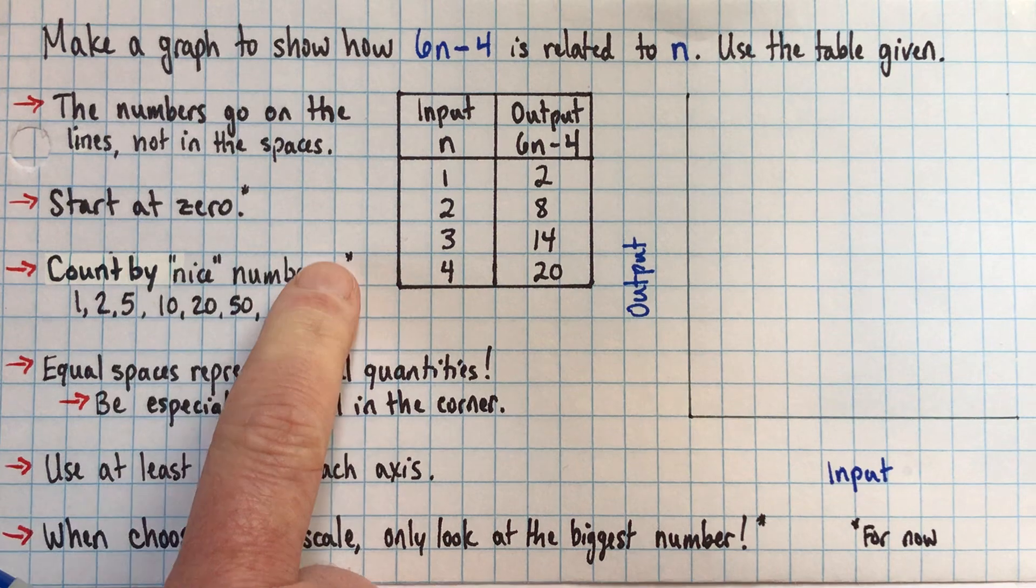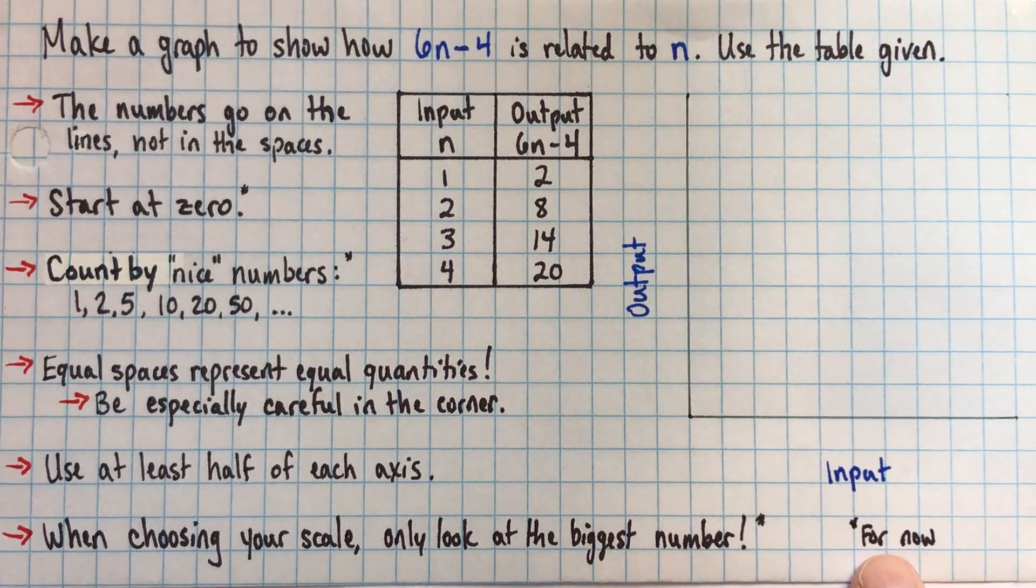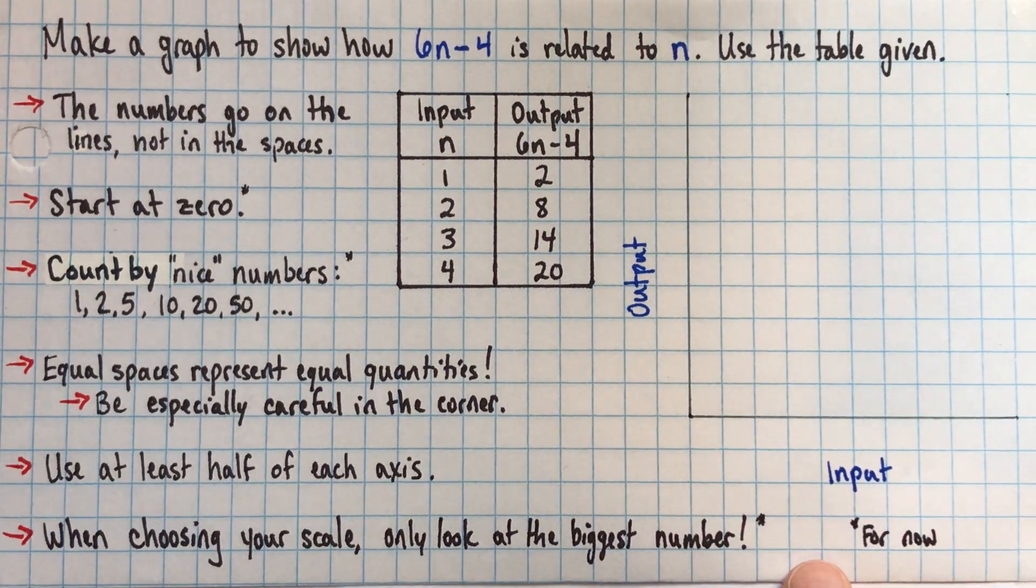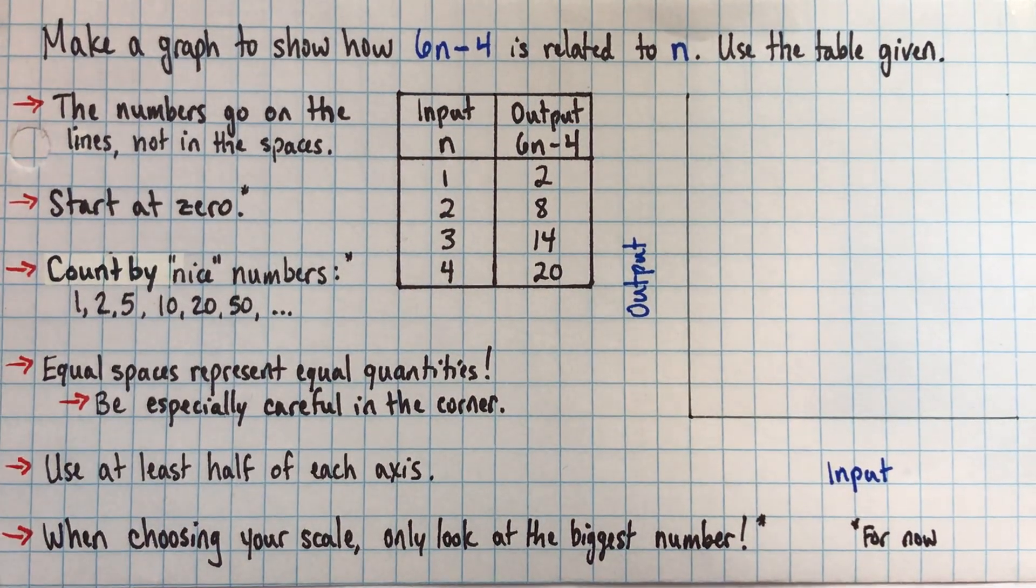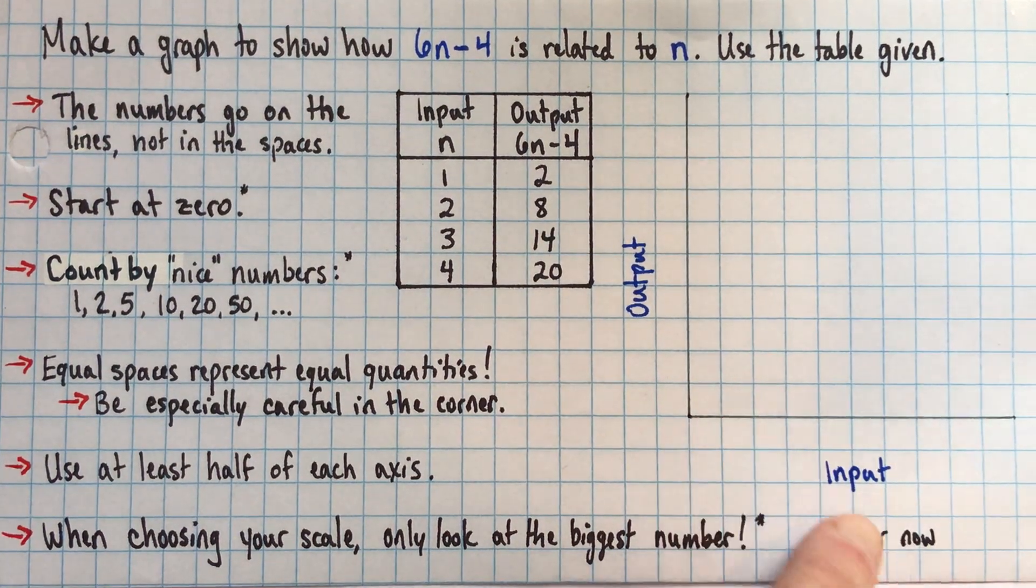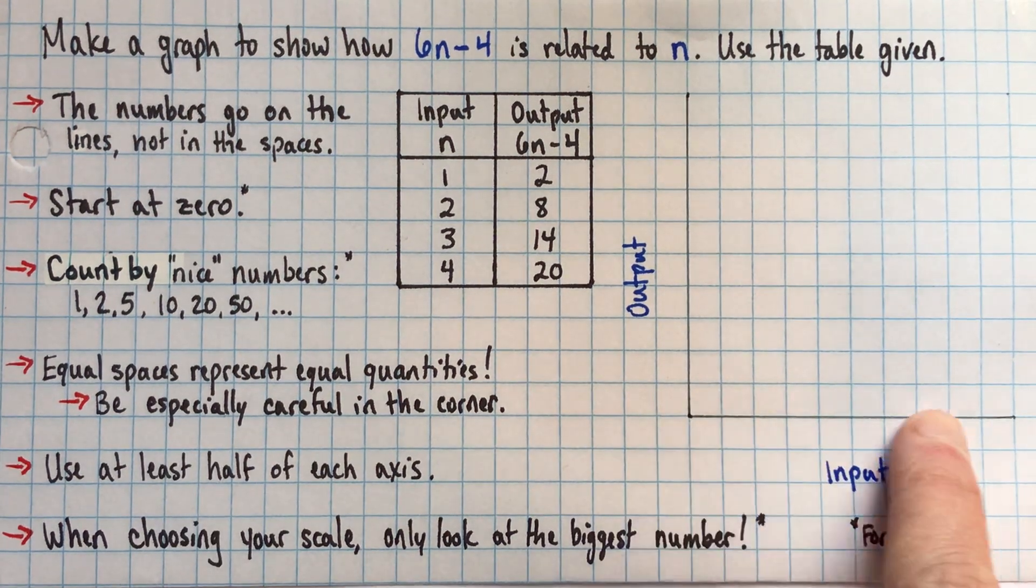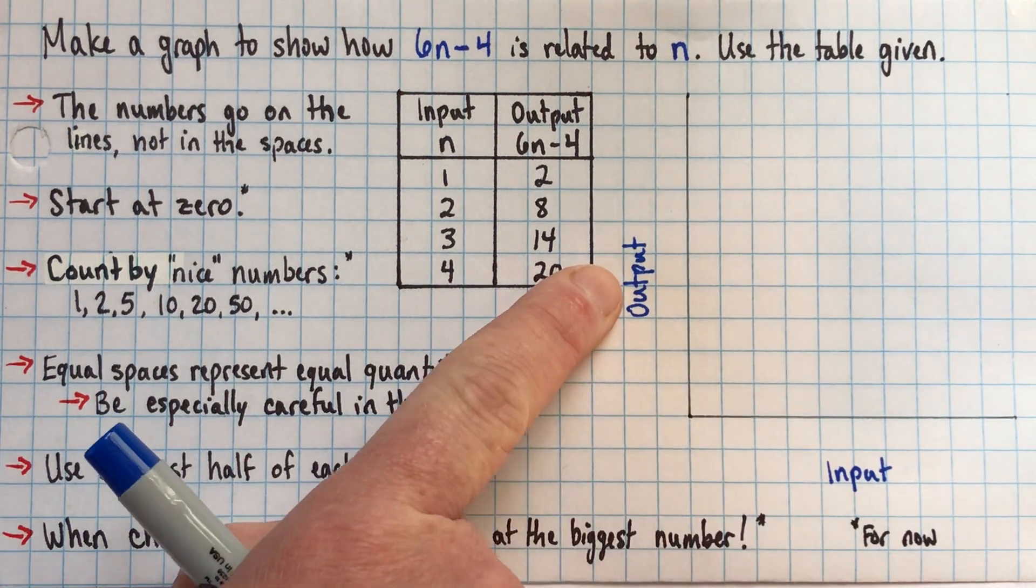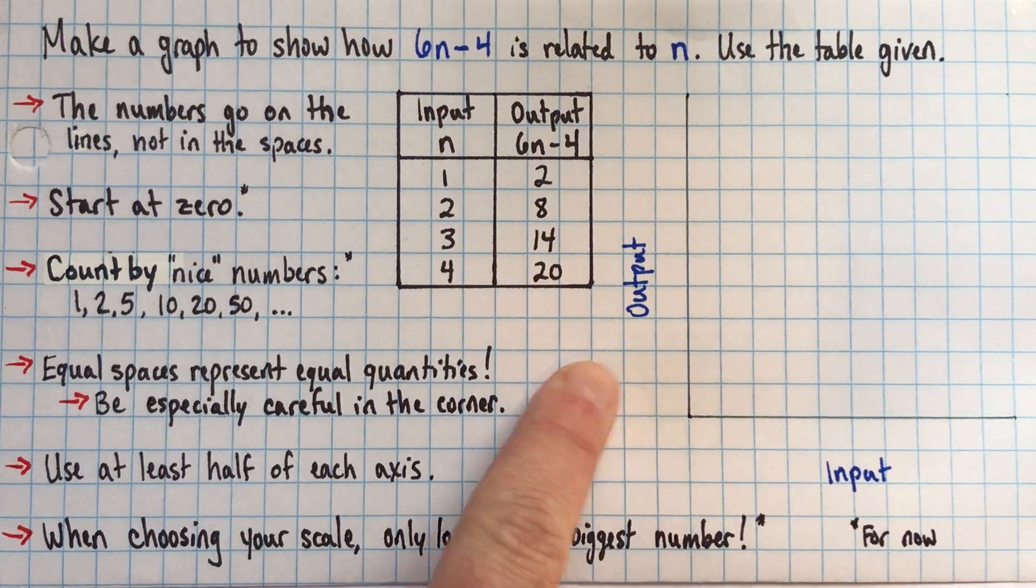There are a few rules that have a little asterisk here. Those rules are true for now. Once you've mastered doing this, then once you can do this, then you can break those rules. But first, I think you need to learn to do this following these rules. And the last rule which I didn't write is that the input goes on the horizontal axis here where I've labeled input, and the output goes on the vertical axis. So if you're using these rules, this is the independent variable and that's the dependent variable if you're using those words.